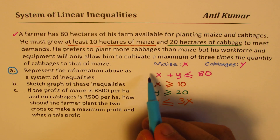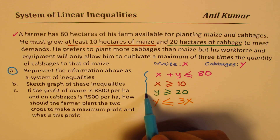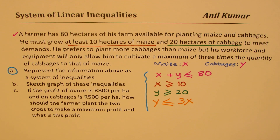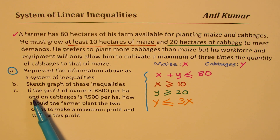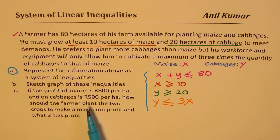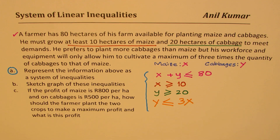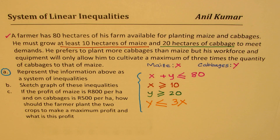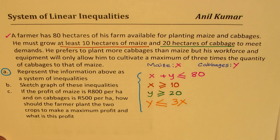So we've got part (a): the system of inequalities with the variables defined. Now we need to sketch the graph of these inequalities for part (b), and then address part (c) — profit of maize at R800 per hectare and cabbage at R500 per hectare. Let's copy these equations onto a fresh page.